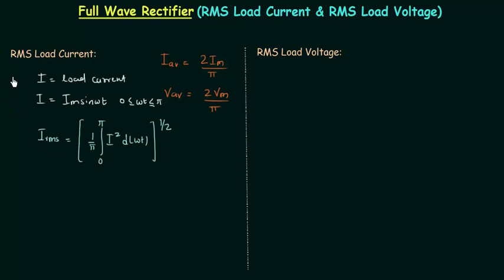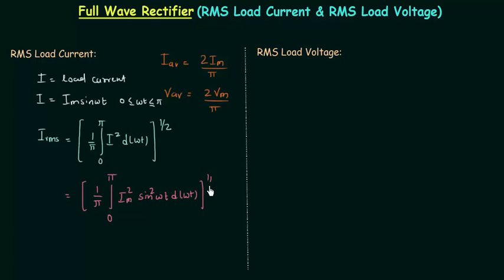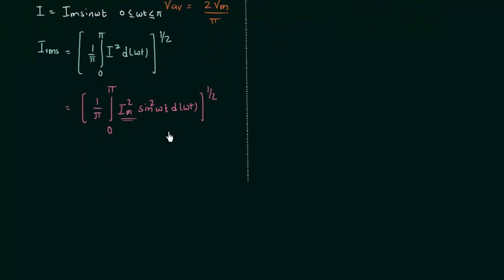I² is equal to Im² sin²(ωt). So in the next step we have (1/π) times the integral from 0 to π of Im² sin²(ωt) d(ωt). Since Im² is constant, I have to integrate only sin²(ωt): Im²/π times the integral from 0 to π of sin²(ωt) d(ωt).